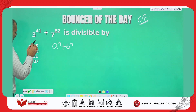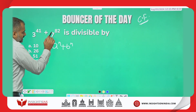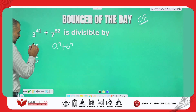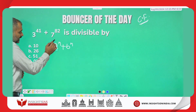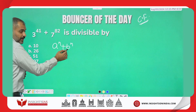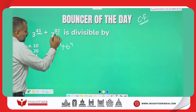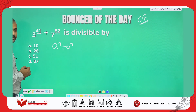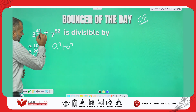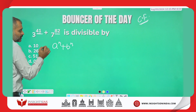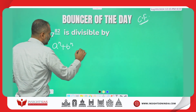Look here: 3^41 + 7^82. If I call a as 3 and b as 7, here the exponent is 41, but here it is 82. The value of n has to be the same — if it is 41 here, it has to be 41 there as well.